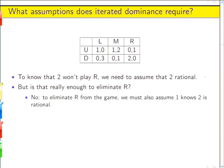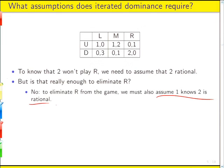No. To eliminate it from the game, we also have to assume that one knows that two is rational. Because we don't cross it out because player two won't play it, we cross it out because player one knows two won't play it and therefore can ignore it in making their own choices.